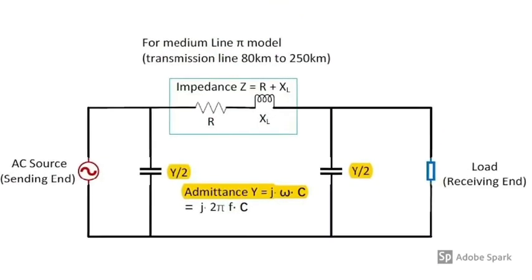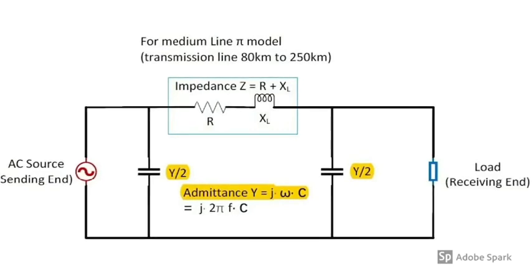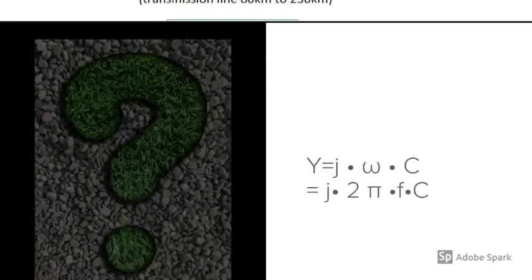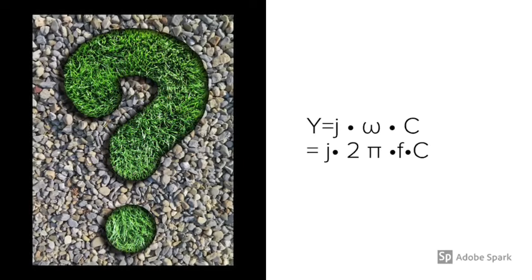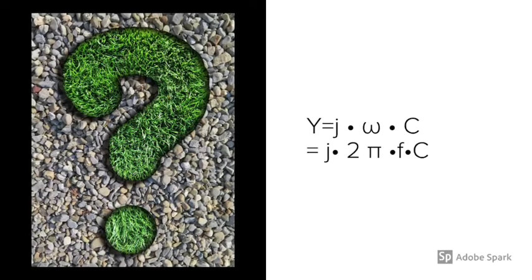The admittance Y is split into two legs of the pi model. To get the admittance value Y, do we know how to calculate the capacitance value C?